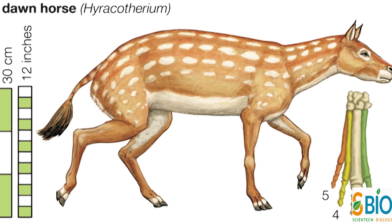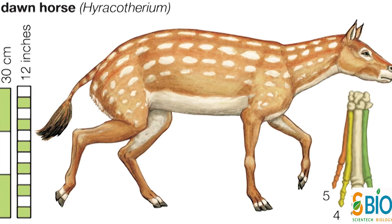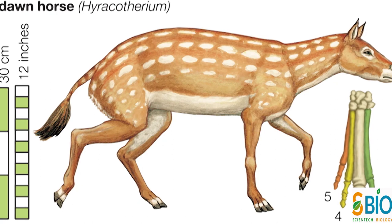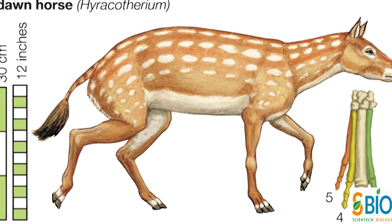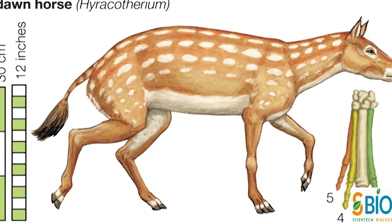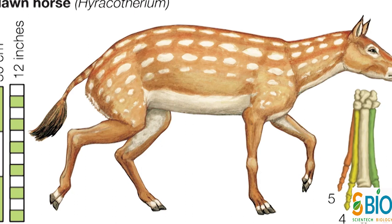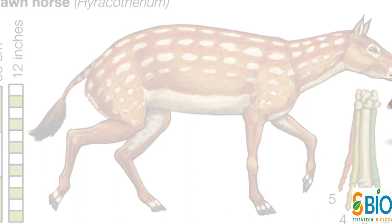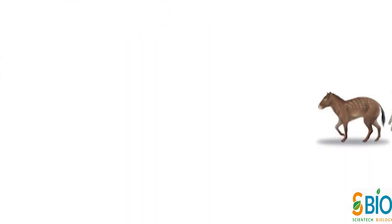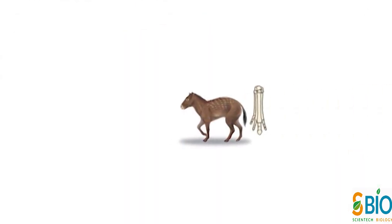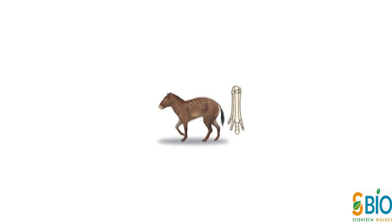पहली Species एक Lamb की आकार की थी जिसका नाम Eohippus या Hyracotherium था। यह छोटी गर्दन, Short Muzzle, Short Legs और लंबी पूँछ के साथ एक कुत्ते जैसी लगती थी। इसकी Height 40 cm से भी कम थी। इसके Front Limbs में 4 और Hind Limbs में 3 Digits थे। Eohippus मासी Area में रहता था और घासी Vegetation को खाने के रूप में इस्तेमाल करता था।